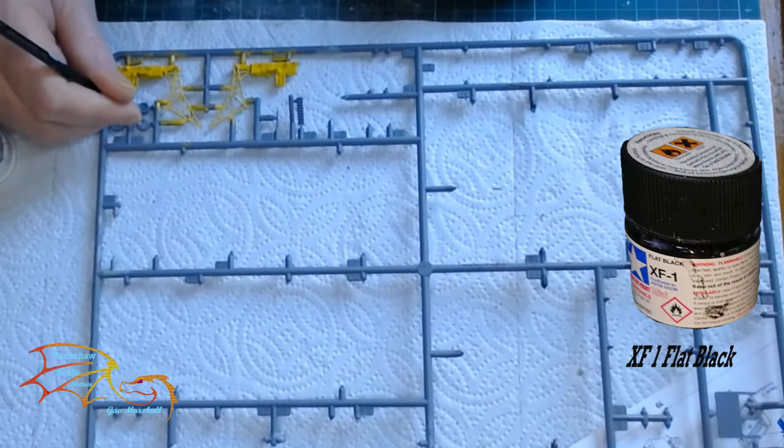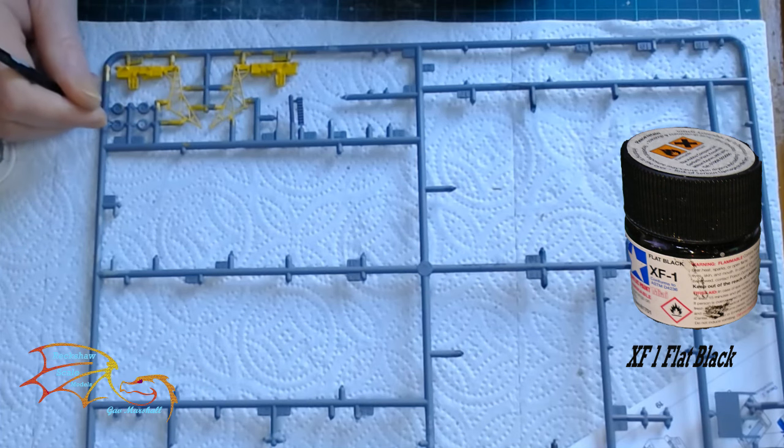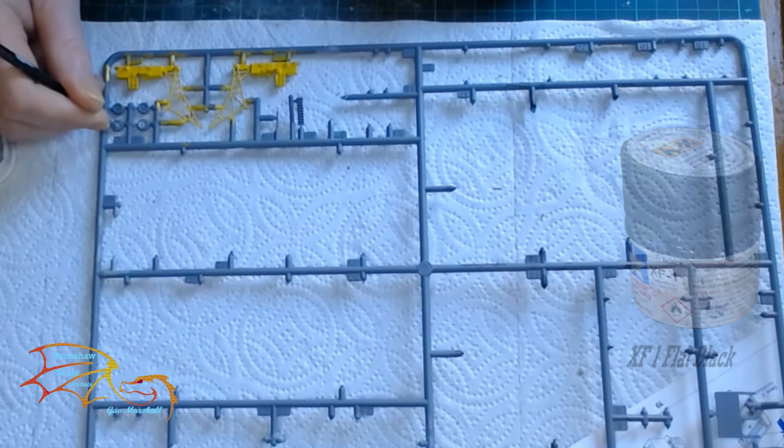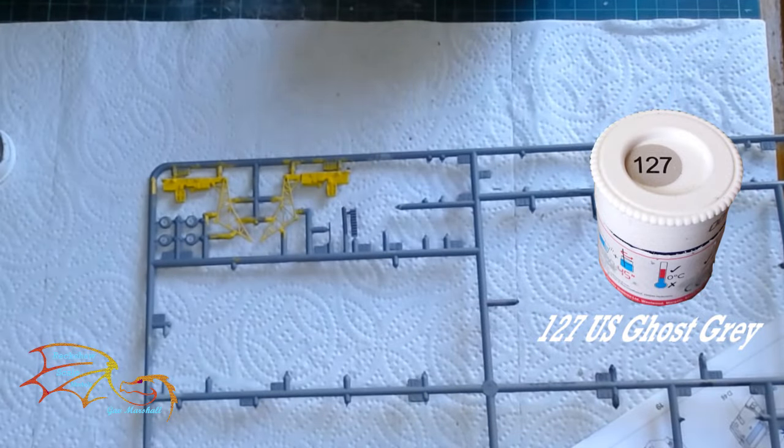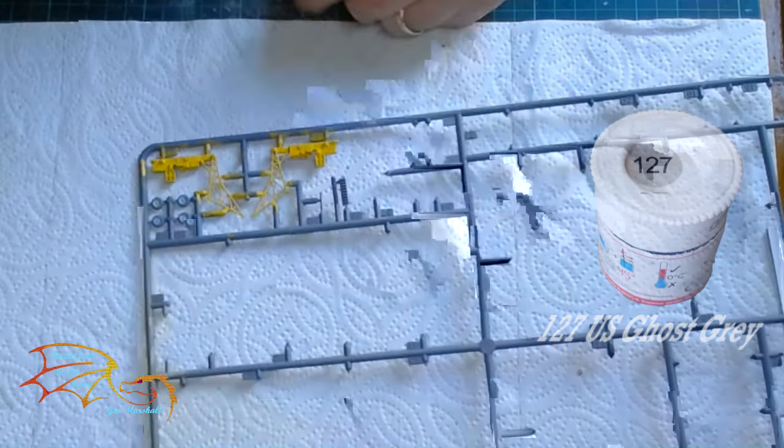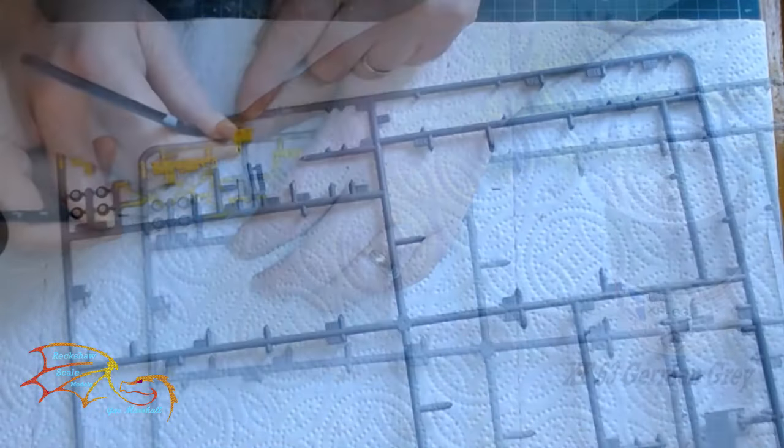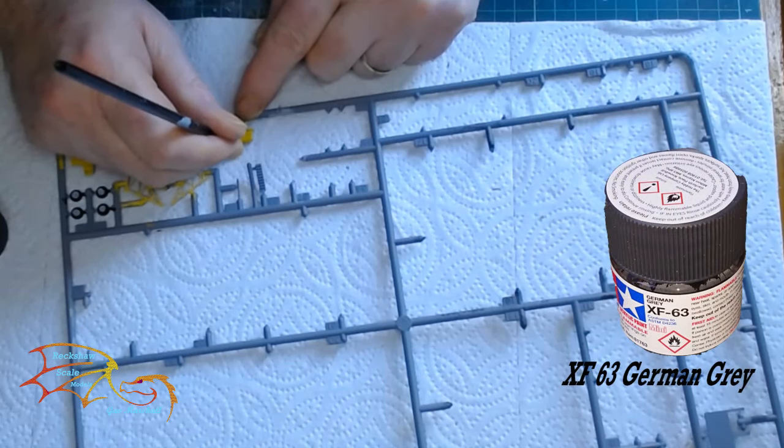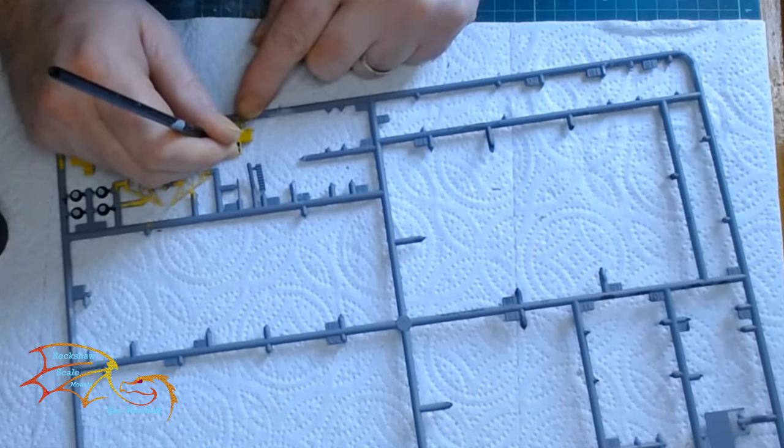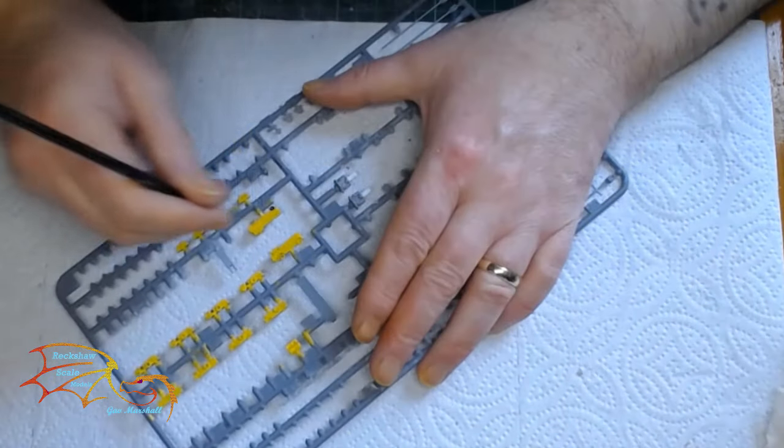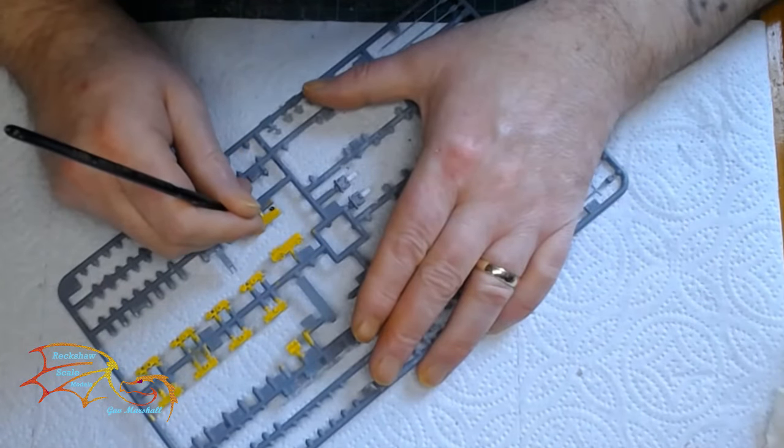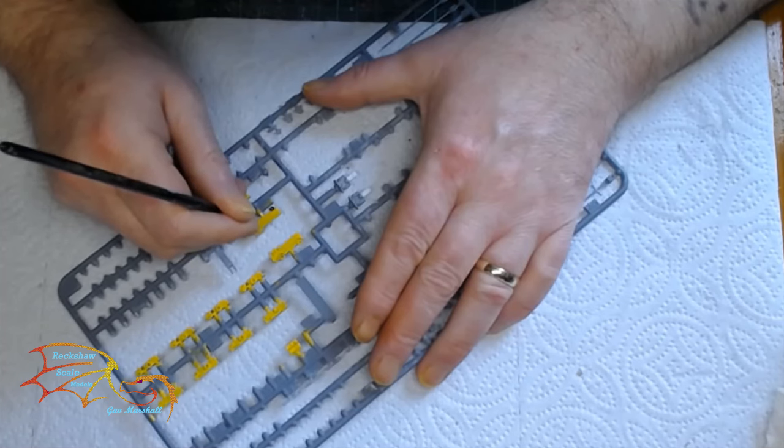For the tires, I'm using Tamiya's XF1 Flat Black. All the tires will be the same color. The cab area is Humbrol 127 US Ghost Grey. The windows are Tamiya's XF63 German Grey. I've done German Grey instead of black just for the contrast with the tires. That will be the same combination for all the support vehicles.